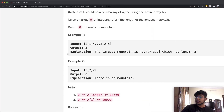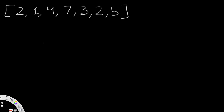Now let's see how we can actually solve this using the same example array. One approach is to use a pointer starting at the first element and checking if the next value is greater. We keep going until we find the start of a mountain, then track values up to the peak and down from it. But a better, easier approach is to first find the peak directly.